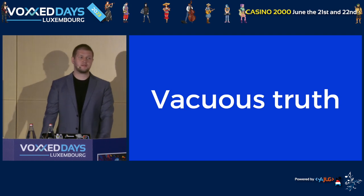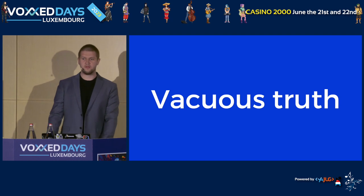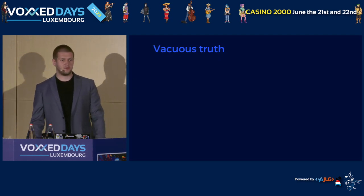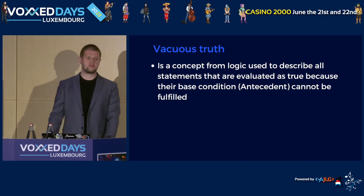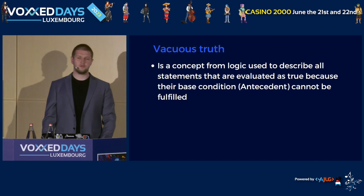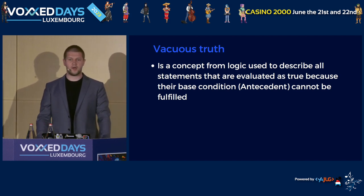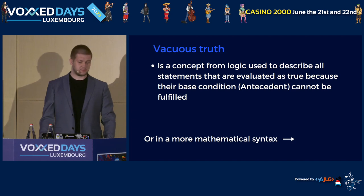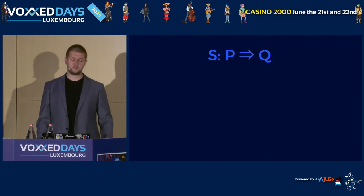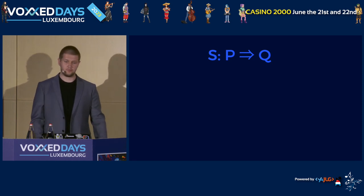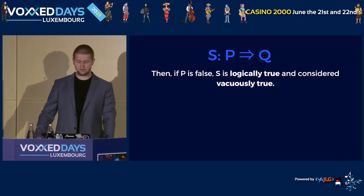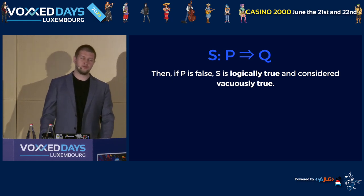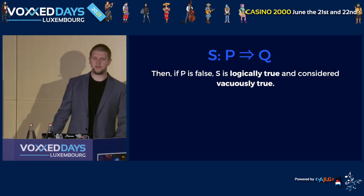Well, it has quite a lot to do with math, because the reason behind all of this is a concept called vacuous truth — a concept from a branch of mathematics known as logic, used to describe all the logical statements that are evaluated as true because their base condition, or antecedent in more formal terms, cannot be fulfilled. In more mathematical syntax: assume we have a logical statement S — if P then Q. If P is false, S is considered logically true and is considered vacuously true. As for the value of Q, it doesn't matter, because we do not even attempt to evaluate the logical value of Q.